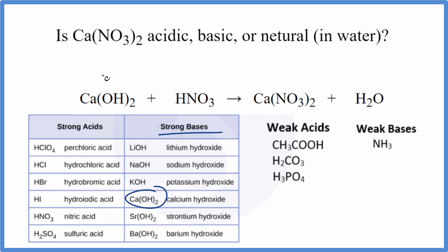That's a strong base. So I'll write SB for strong base, and nitric acid, HNO3, that's a strong acid, so we'll write SA. So we know the strength of the acid and the base.